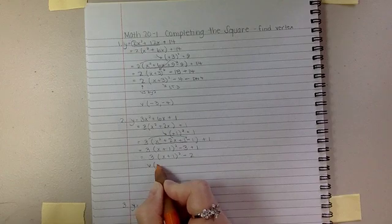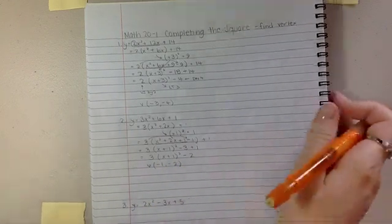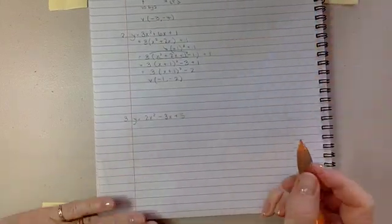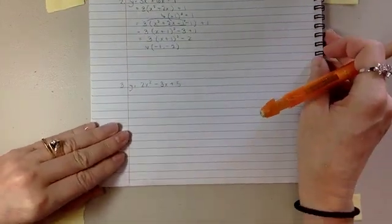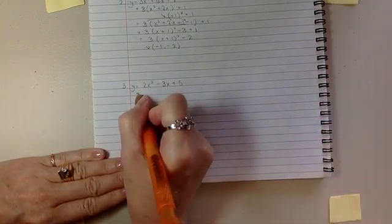I can see my vertex is negative 1 and negative 2, among other things. Okay, number 3. Give this guy a try before I do it and then turn back on the video. Here we go.